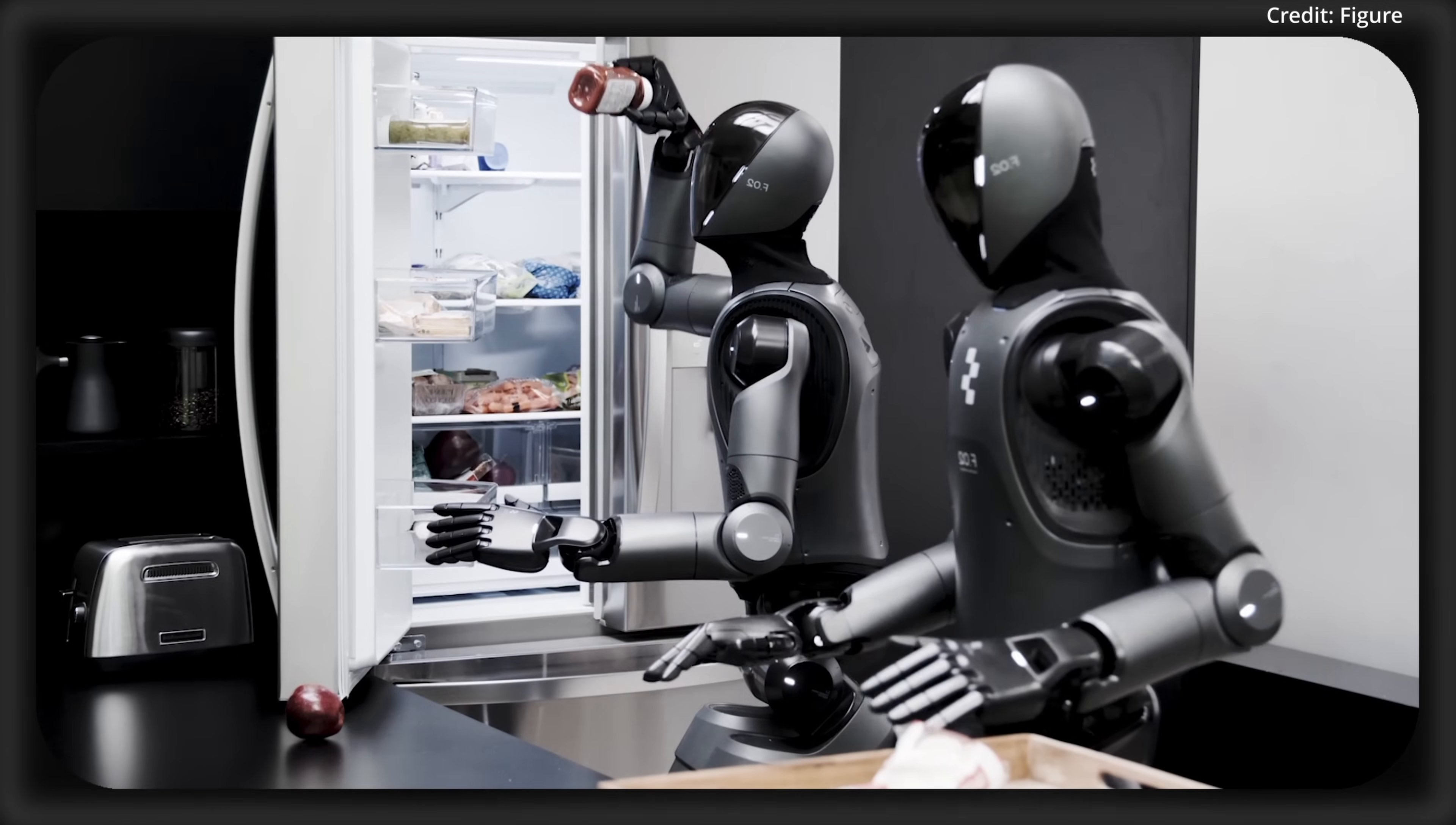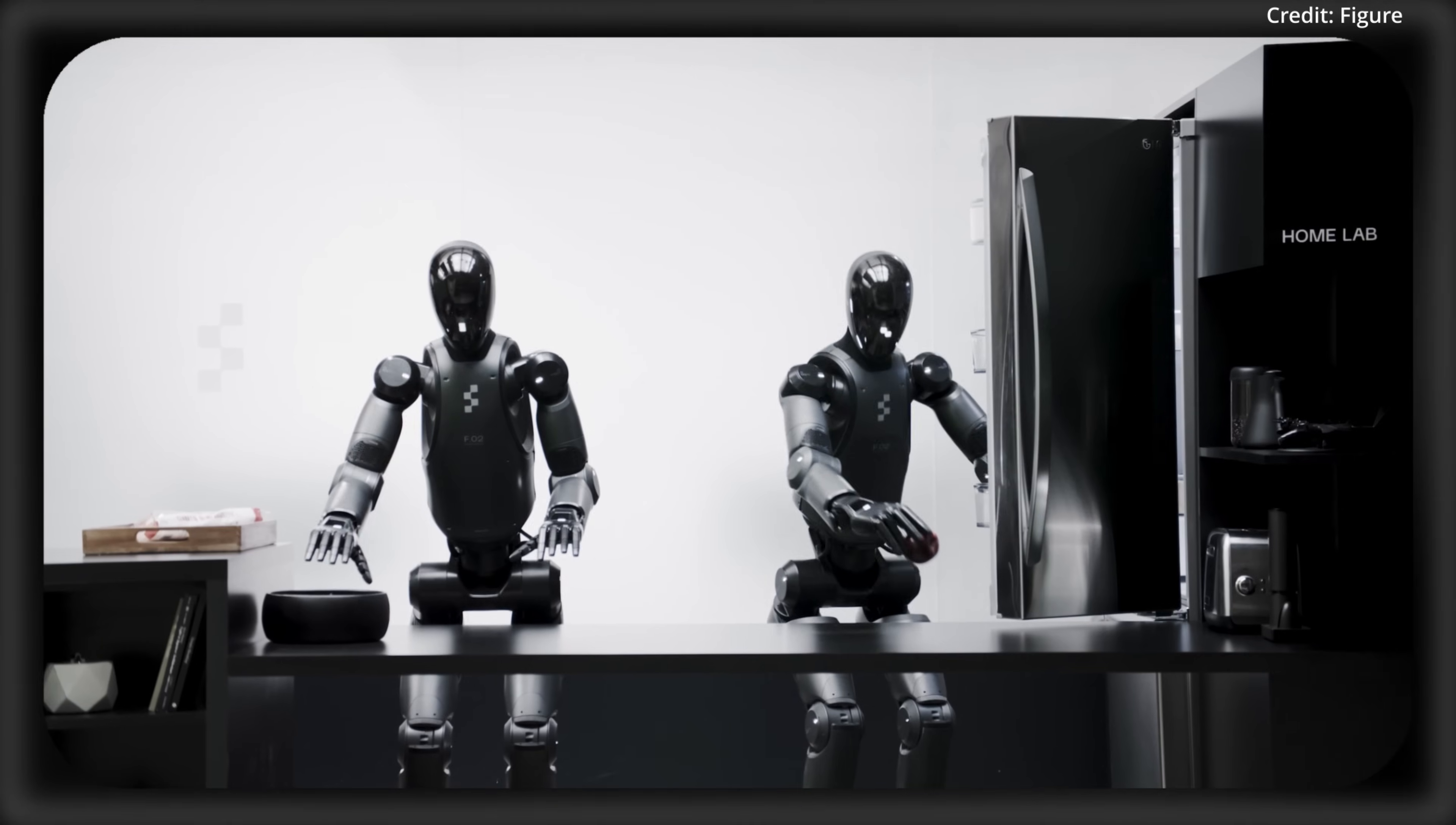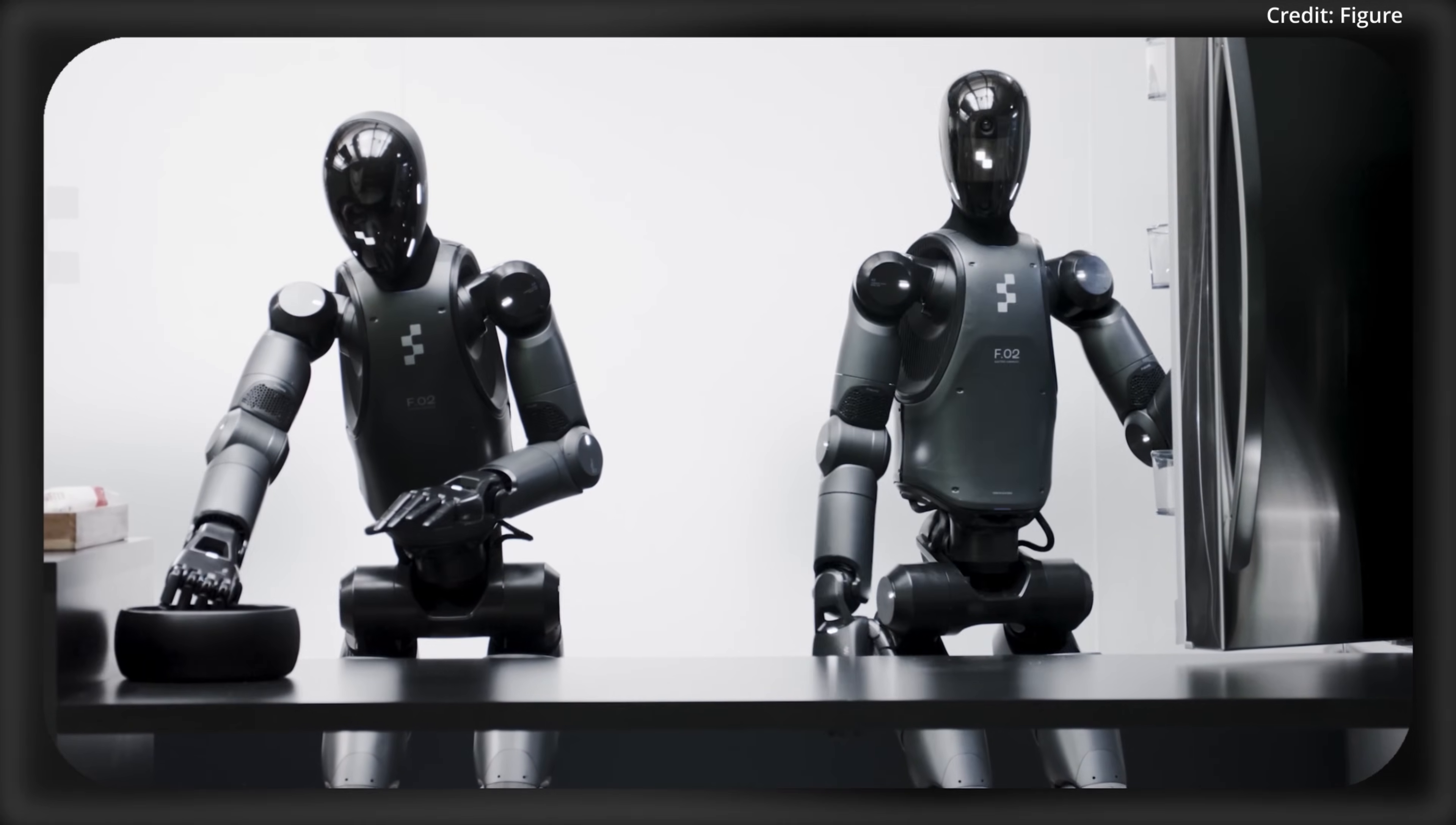One passes a cookie bag to the other, which stashes it in a drawer, guided by verbal prompts. Both of these robots run identical Helix weights with no custom roles needed. Impressively, this level of zero-shot collaboration is a VLA-first, hinting at a future where robot teams can adapt to work together dynamically.